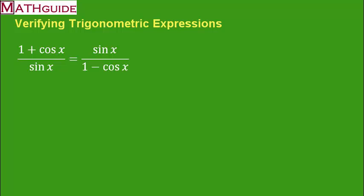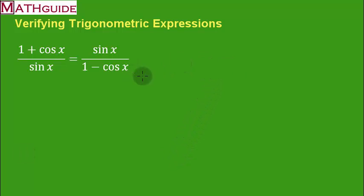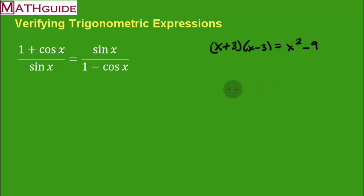Here's our second problem. I'm going to work with the right-hand side and try to make it look like the left-hand side. To understand what I'm about to do, let me recall some algebra: if you take x plus 3 times x minus 3, you get x squared minus 9. That's because the inside gives 3x and the outside gives negative 3x, and those x terms cancel.